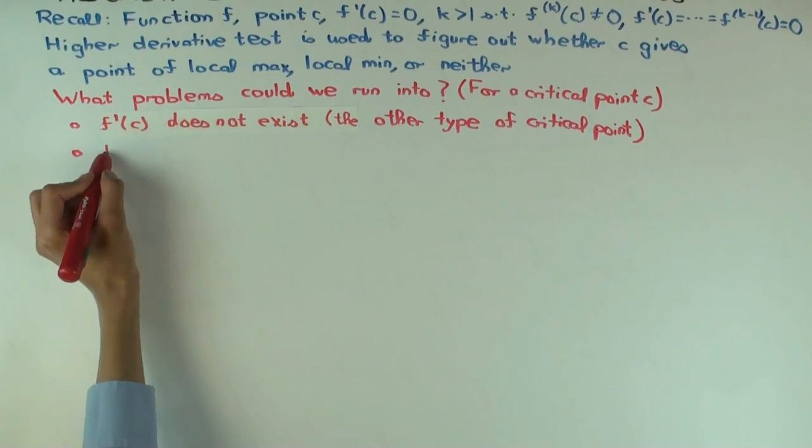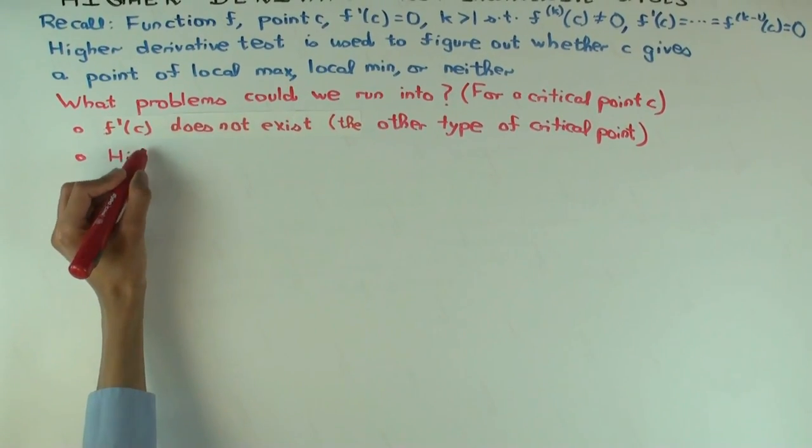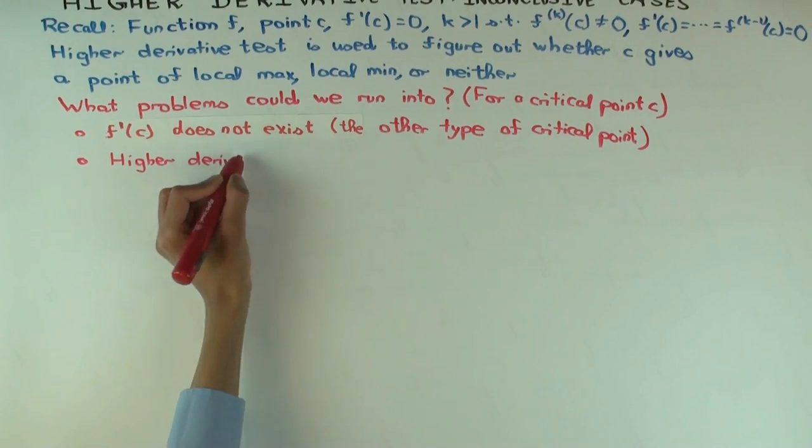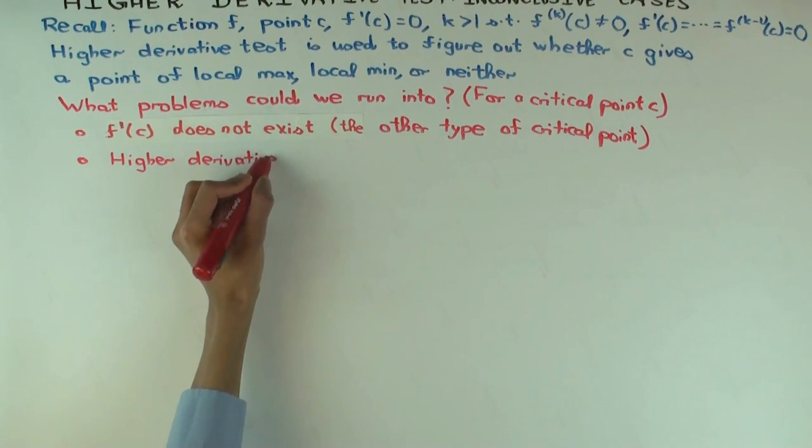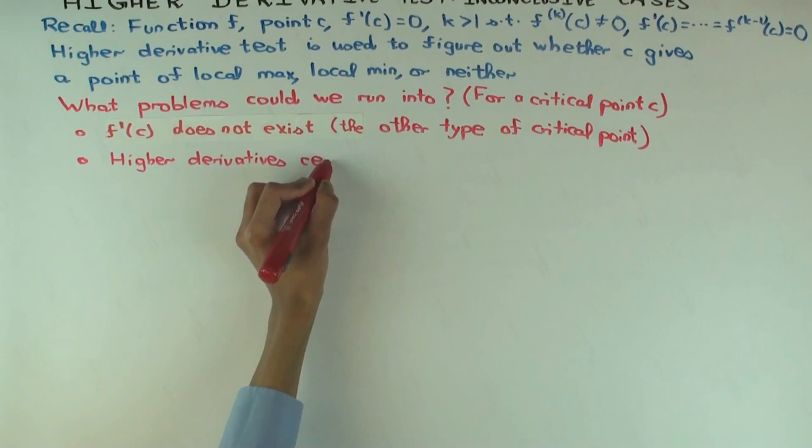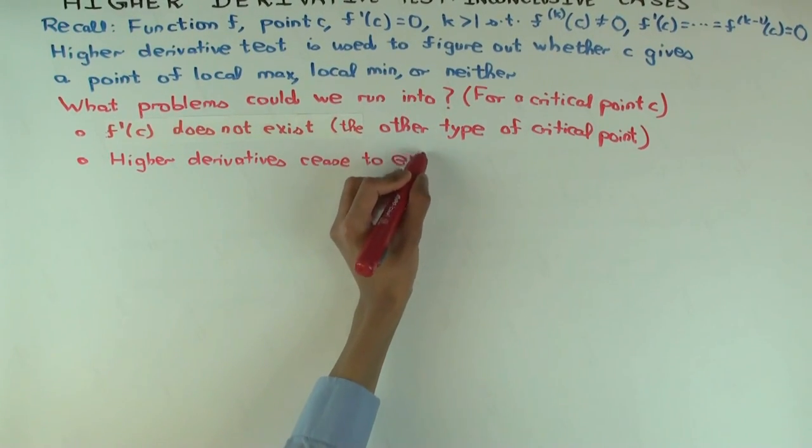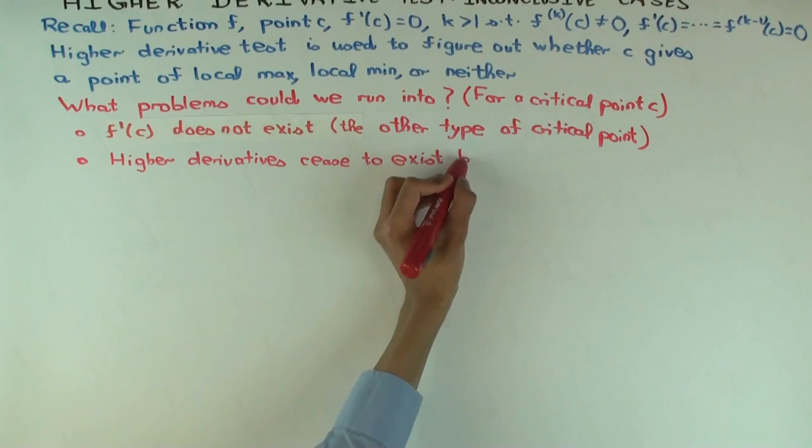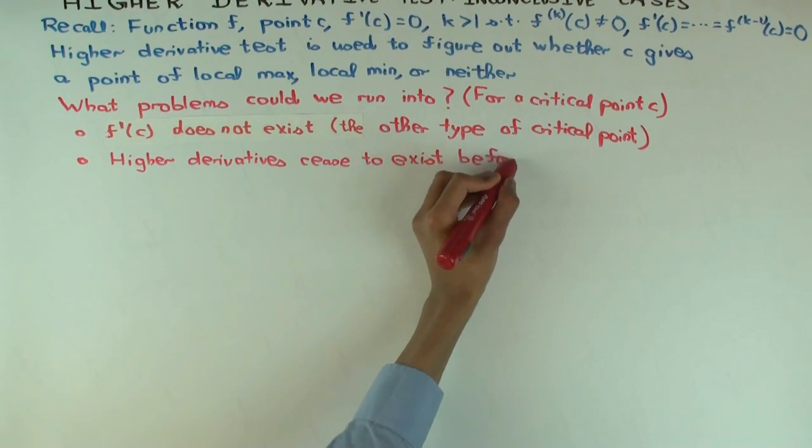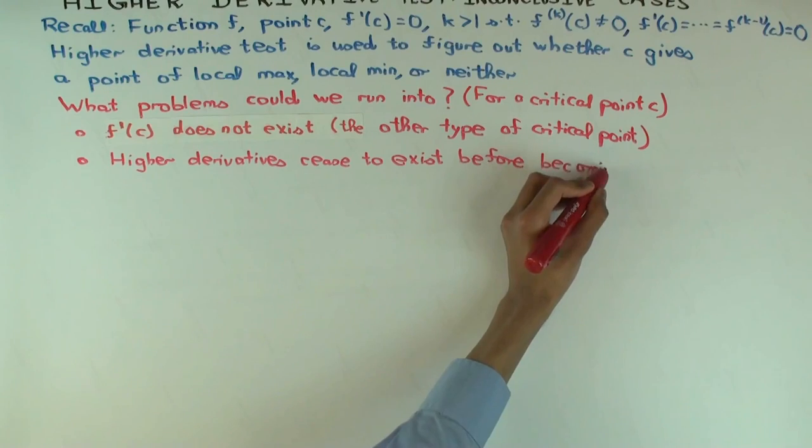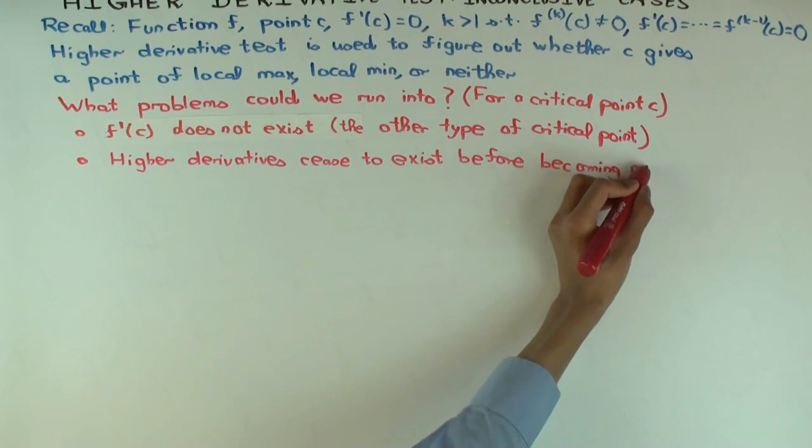It doesn't exist before it becomes non-zero. Yes, so the higher derivatives cease to exist before becoming non-zero.